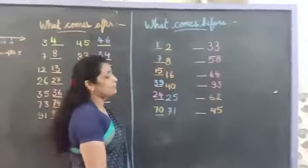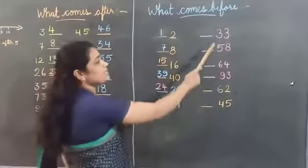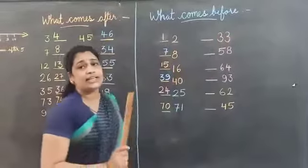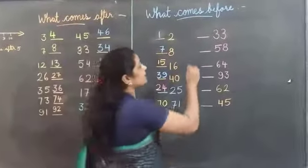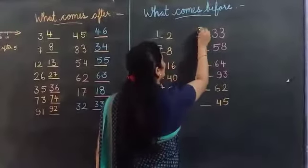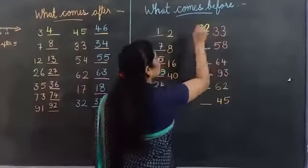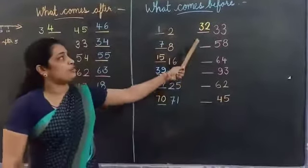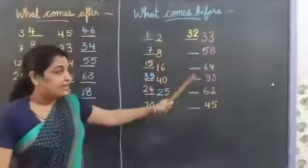And next — which number is this? 33. 33 ke pehle kya hota hai? 3, 2 — that is 32. 32 comes before 33.